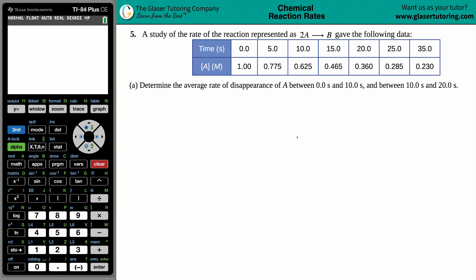Number 5: A study of the rate of the reaction represented as 2A → 2B gives the following data. We have this chart which links time in seconds to the concentration of A. As time increases from 0 to 5 to 10 seconds and so forth, the concentration is dropping. Over time we're losing A, and that makes sense because as your reaction progresses, your A value should drop as your product rises.